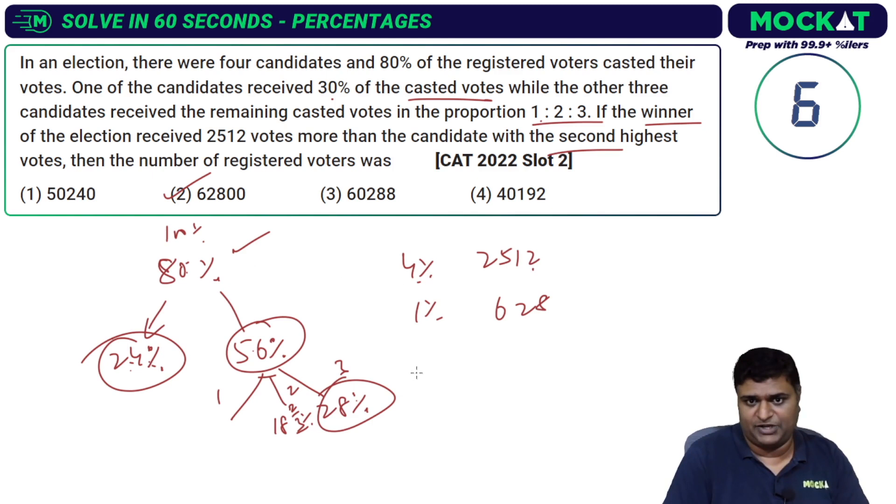If 4 percent is 2512, how much is 100 percent? Instead of multiplying by 25, divide by 4: 1 percent is 628, then the full 100 percent times 100 is 62,800. You don't even need to find it - you can just mark it and keep going.